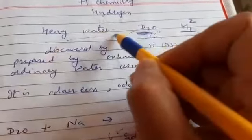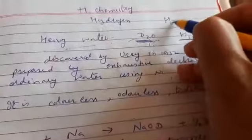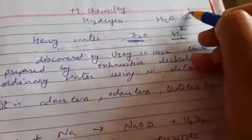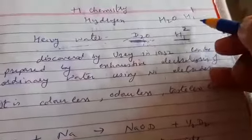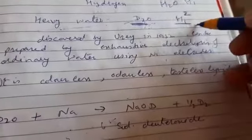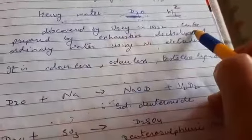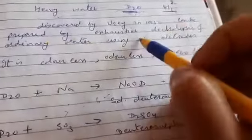Heavy water is similar to H2O, which is formed from the first isotope of hydrogen (protium). Heavy water is formed from the second isotope of hydrogen, deuterium. It was discovered by Urey in 1932 and can be prepared by exhaustive electrolysis.